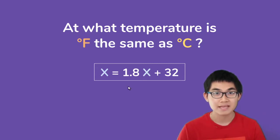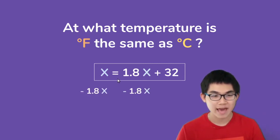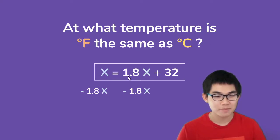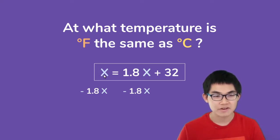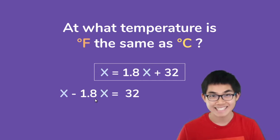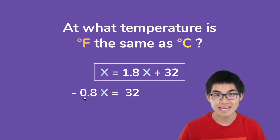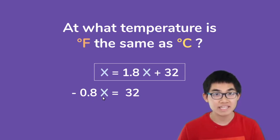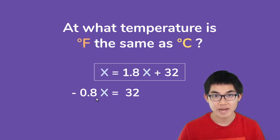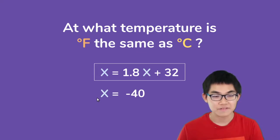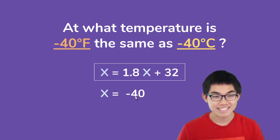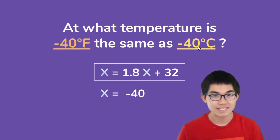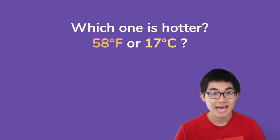The first thing I'm going to do is subtract 1.8x from both sides. By doing this I will have x on one side of the equation, so 1.8x minus 1.8x is 0 — these two cancel out. Over here it is x minus 1.8x, and x minus 1.8x is the same thing as negative 0.8x. Now to find x we only need to divide both sides by negative 0.8, and that will give us negative 40. So negative 40 degrees Fahrenheit is equal to negative 40 degrees Celsius.